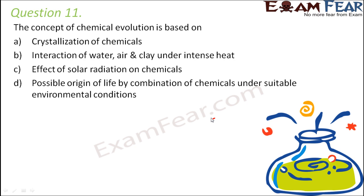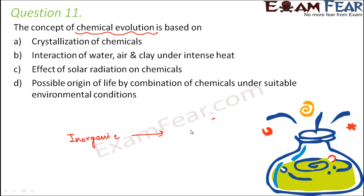So what is chemical evolution? Chemical evolution is the concept of formation of complex organic molecules from simpler inorganic ones through chemical reactions in oceans during the early history of the earth. The period of chemical evolution lasted for less than a billion years.